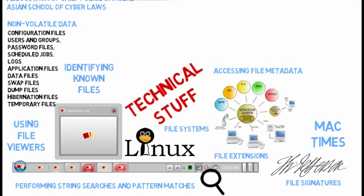Swap files are used by most operating systems in conjunction with RAM to provide temporary storage for data often used by an application. Swap files extend the amount of memory available to a program by allowing pages or segments of data to be swapped in and out of RAM. Swap files may contain a broad range of OS and application information, such as usernames, password hashes, and contact information.